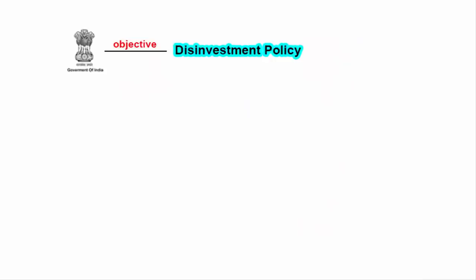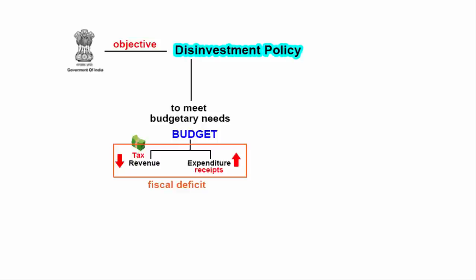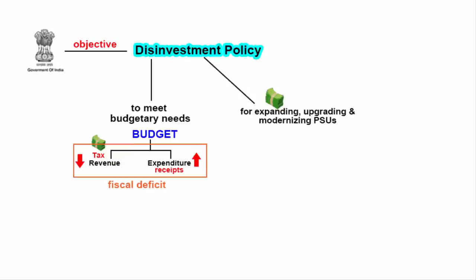There are several objectives behind the Government of India's disinvestment policy. The first is that the government sells its own property to meet its budgetary needs, which in turn reduces the fiscal deficit — the gap between government expenditure and revenue. Another reason is to raise funds for expanding, upgrading and modernizing public sector enterprises. Since the private sector has funds and operates efficiently and strategically, this will unlock these PSUs' true market value and potential, leading to overall economic growth of the country.